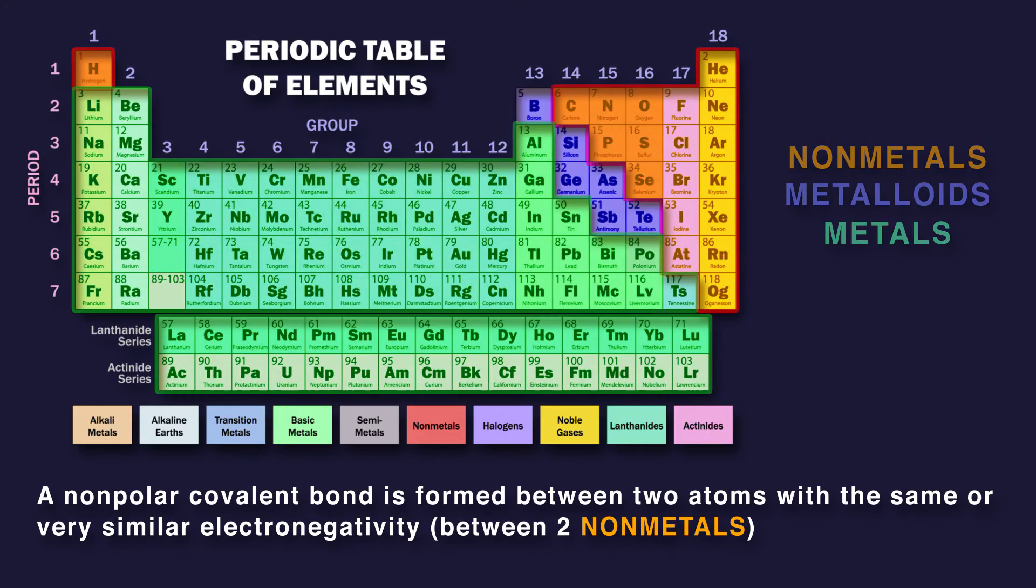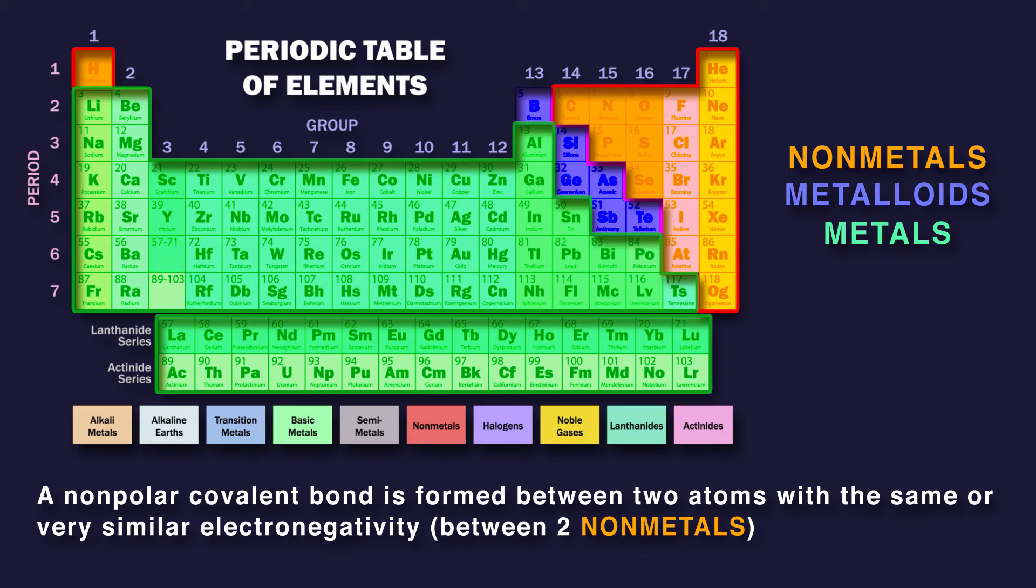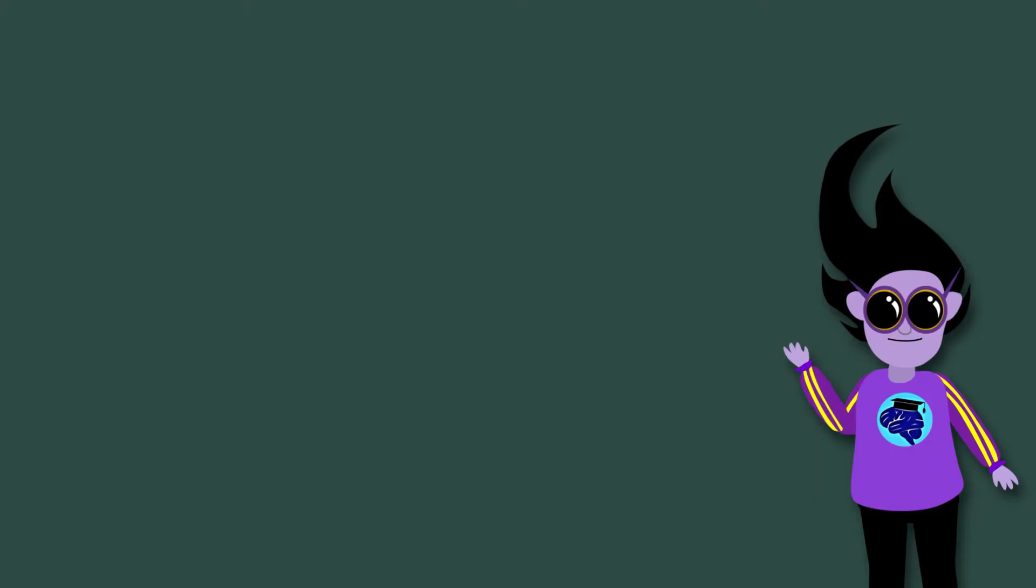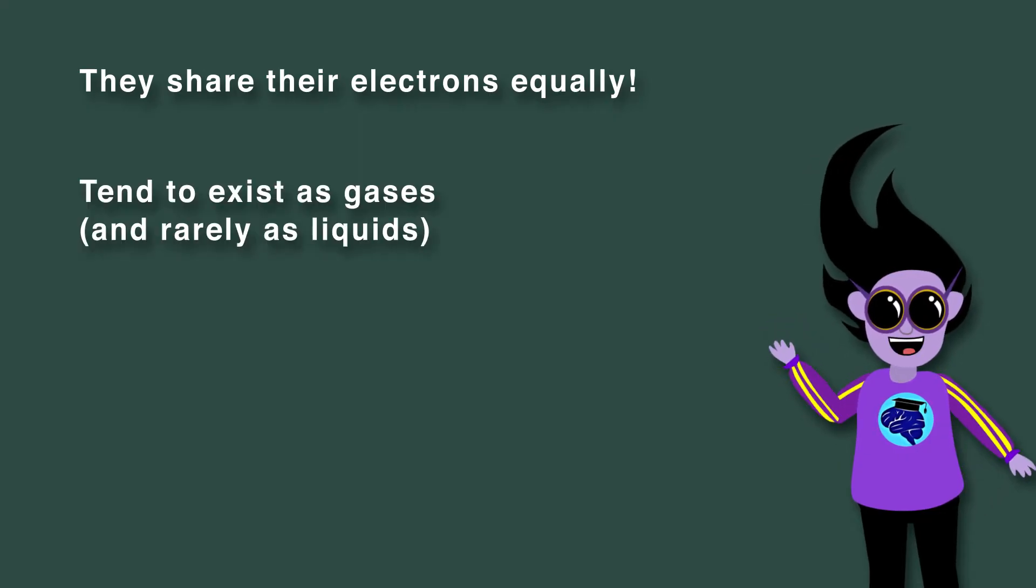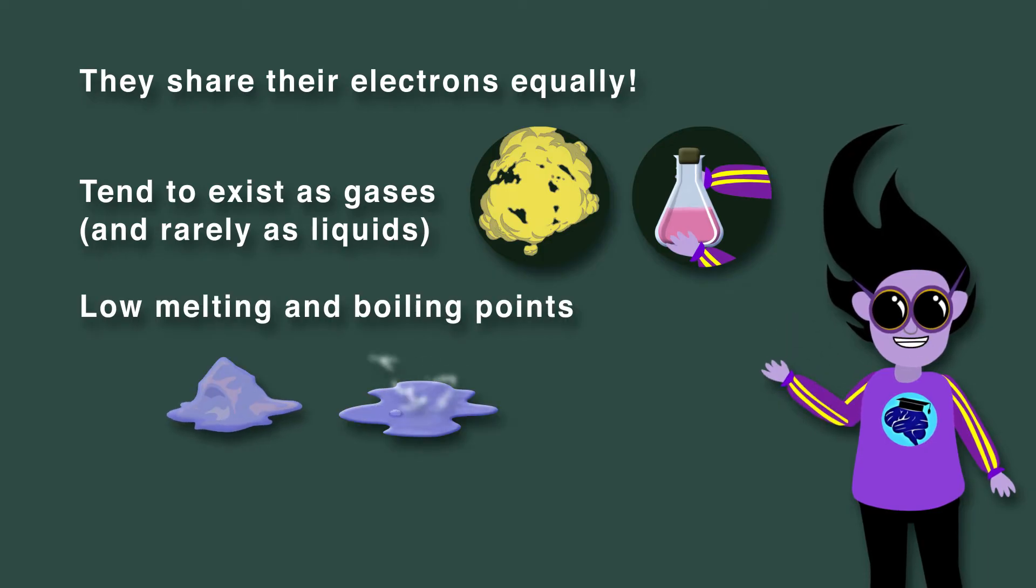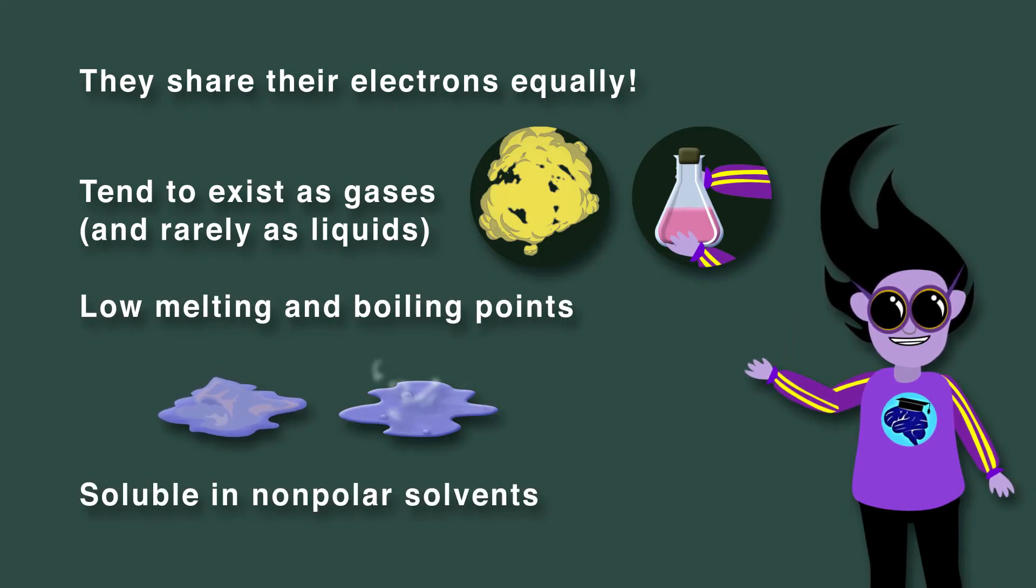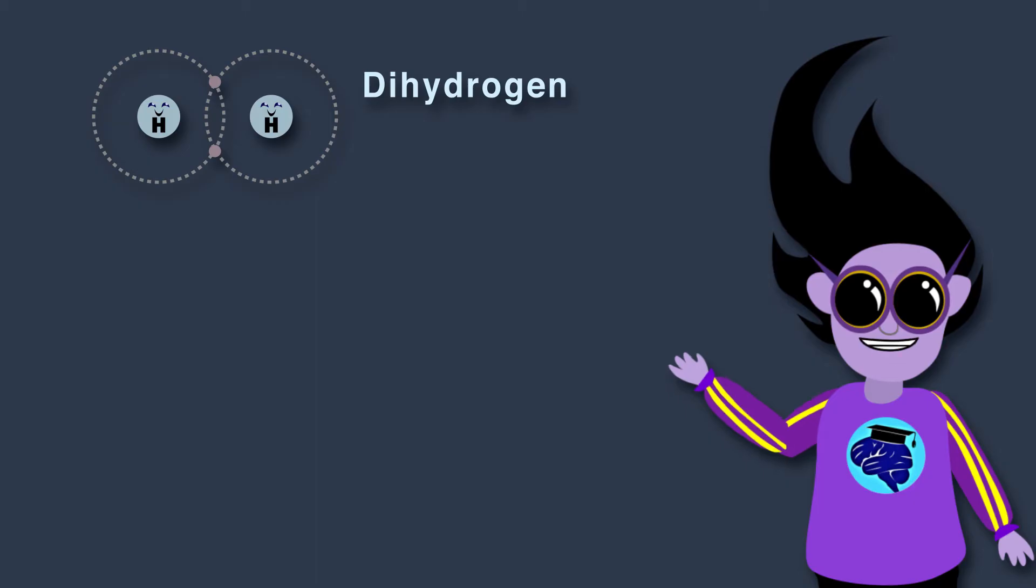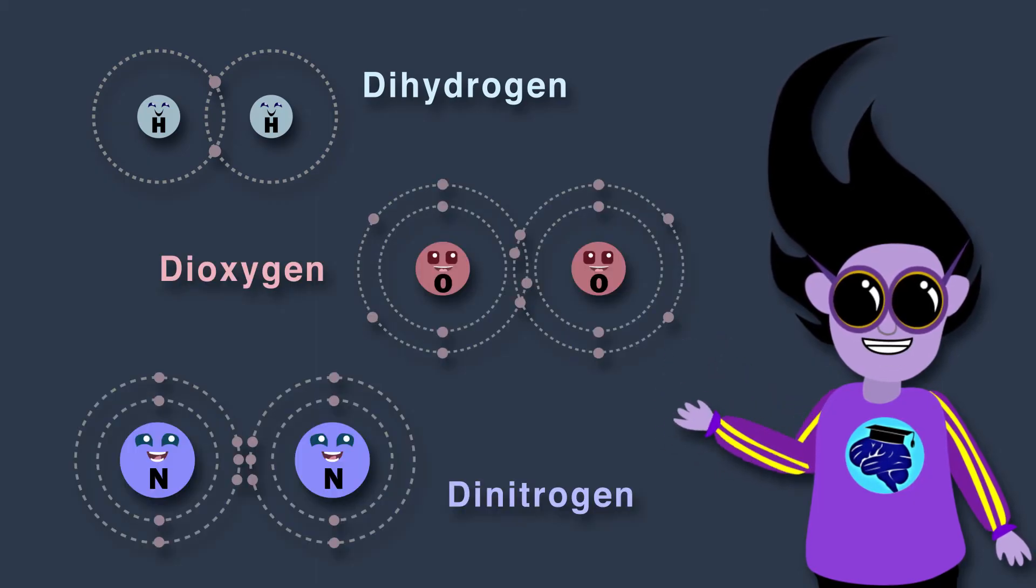A nonpolar covalent bond is formed between two atoms with the same or very similar electronegativity. They share their electrons equally. These substances tend to exist as gases and rarely as liquids. They have low melting and boiling points and are soluble in nonpolar solvents. Examples include dihydrogen, dioxygen, and dinitrogen.